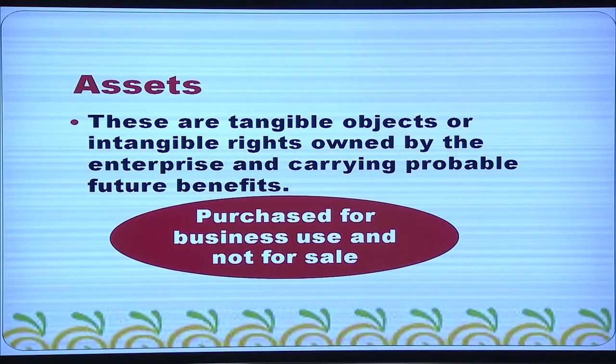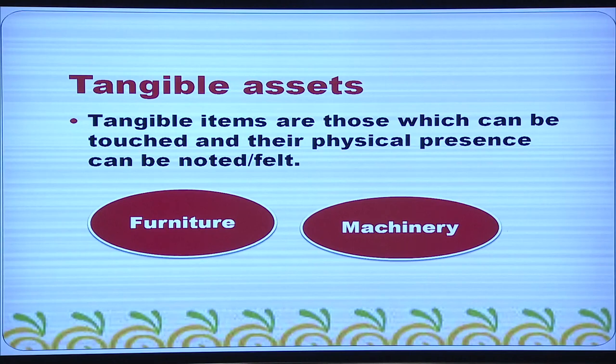Assets are things having certain value inside the business. These are tangible objects or intangible rights owned by the enterprise and carrying probable future benefits. Assets are purchased for business use and not for sale. We have tangible assets and intangible assets, as well as fixed assets and current assets. Tangible items are those which can be touched and their physical presence can be noted or felt — land, building, plant, and machinery are tangible assets.